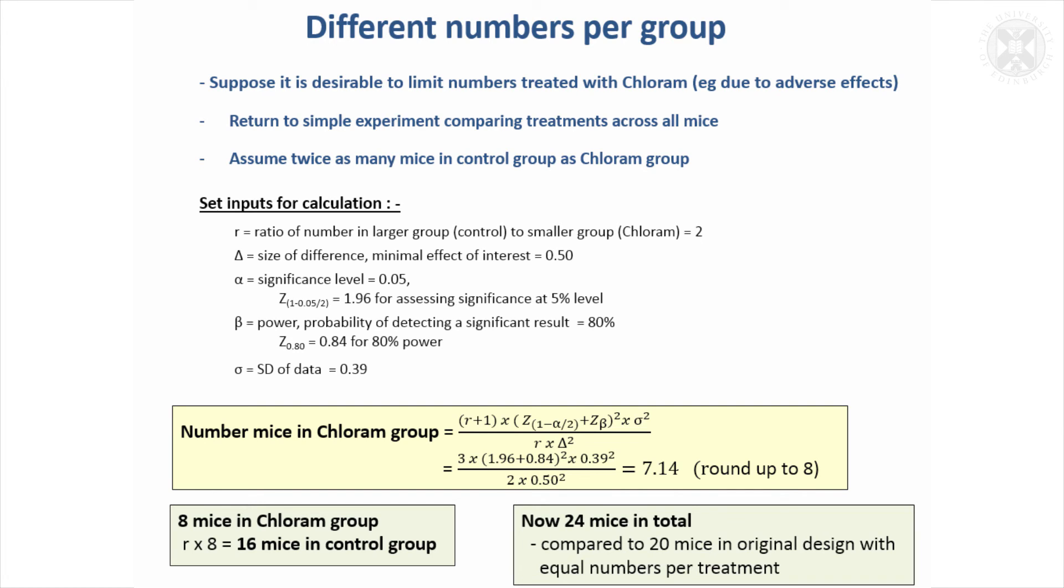The most efficient design has got the same number of animals in each group, so it's only if there's another reason to have one group smaller than the other that it's worth considering.